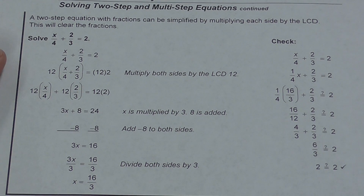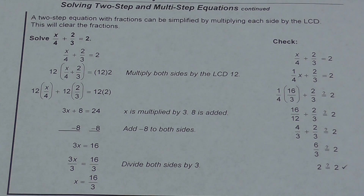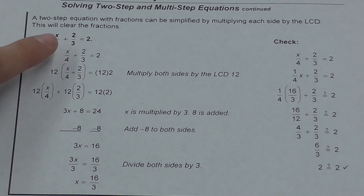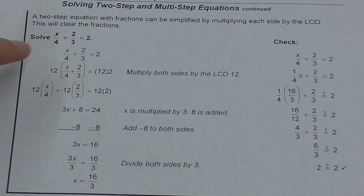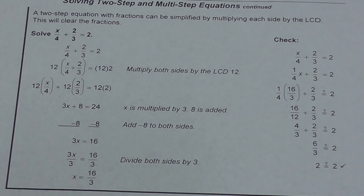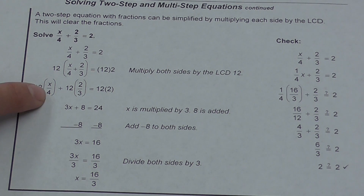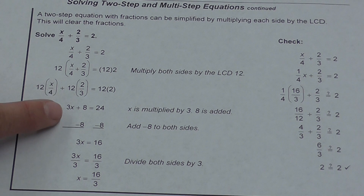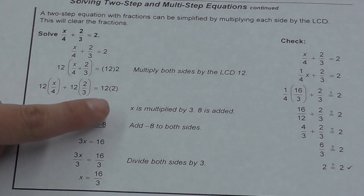Some other ways you may have to solve two-step equations involve dealing with fractions. The very best way to get rid of fractions is to find the lowest common denominator and multiply everything by that number so there are no more denominators. Looking at denominators 4 and 3, the number both go into is 12. So multiply everything by 12: 12 times x over 4 gives 3x, 12 times 2 thirds gives 8, and 12 times 2 gives 24.